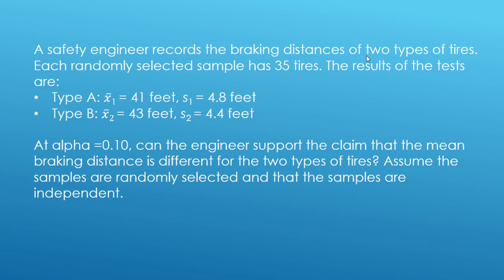Now that tells me off the top this is a two-sample test, and we're also told that each sample has 35 tires. Because n is greater than 30, and we also know that these are randomly selected and the samples are independent, those two things tell me that we can use the z-test to solve this as opposed to the t-test.